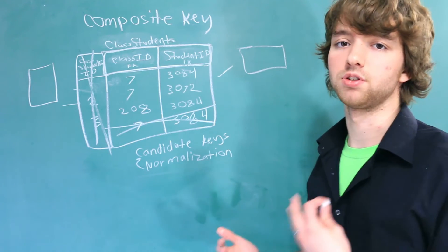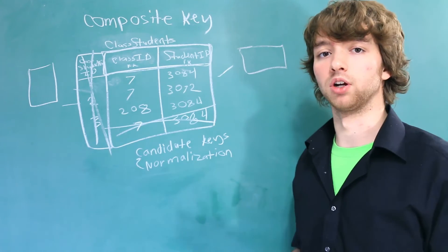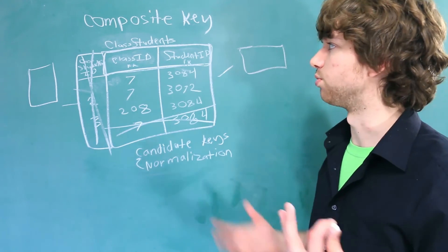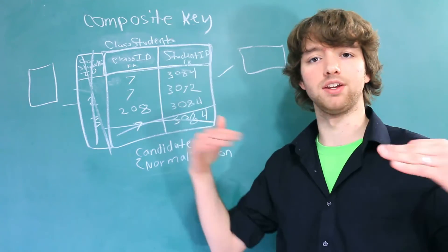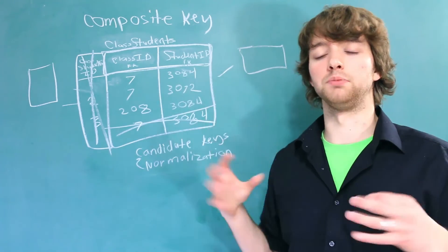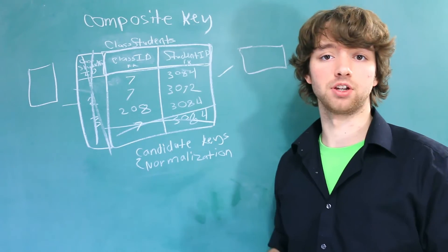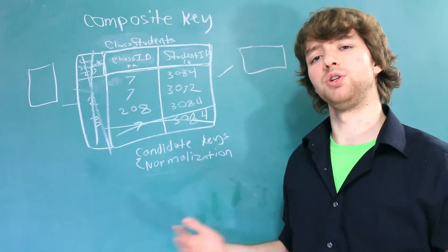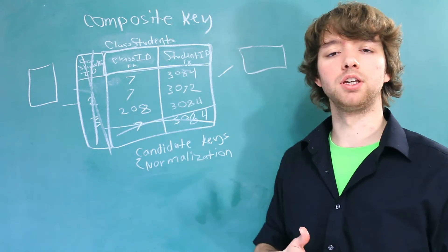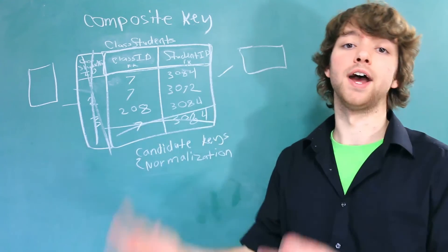You might also be able to guess if you're using natural keys, things can get a little bit more complicated because you don't just have individual IDs to identify rows. So you might have to combine a bunch of columns to make something unique, which can make normalization a bit more challenging, in my opinion. Let me know what you guys think if you prefer primary keys as surrogate or natural keys.